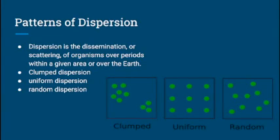Dispersion is the scattering of organisms over a given area of the earth. There are three main types: clumped, uniform, and random. Clumped dispersion is when individuals in a population are clustered together, creating some patches with many individuals and some with none. Uniform dispersion is when individuals are spaced evenly throughout an area. Random dispersion is when individuals are arranged without any pattern or form.